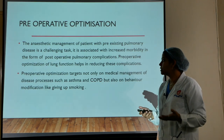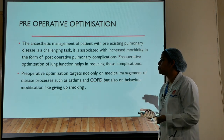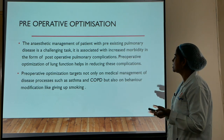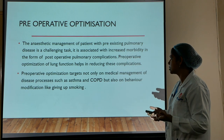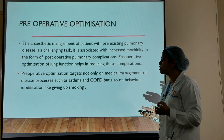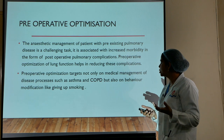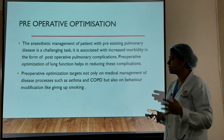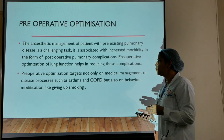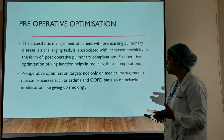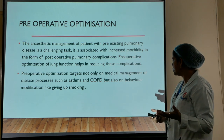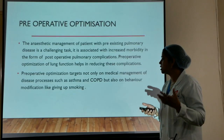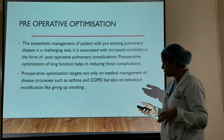Pre-operative optimization of patients with pulmonary diseases — whether obstructive or restrictive — is a challenging task associated with increased morbidity from post-operative pulmonary complications. Optimizing lung function helps reduce these complications. Pre-operative optimization targets not only medical management of diseases such as asthma and COPD, but also behavioral modification like giving up smoking and educating patients about incentive spirometry, both pre- and post-operatively.